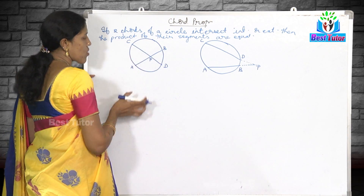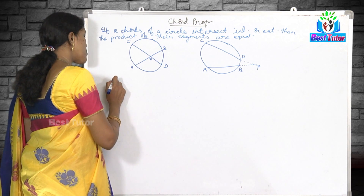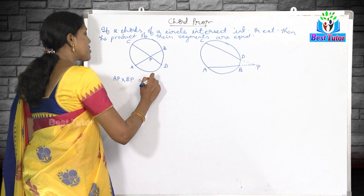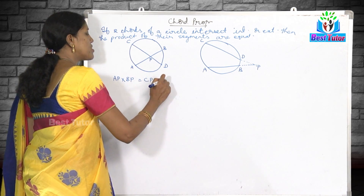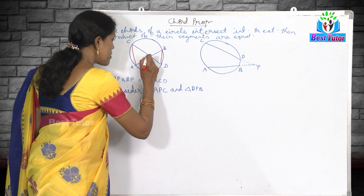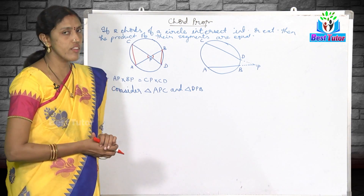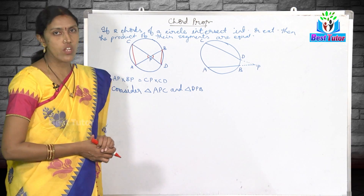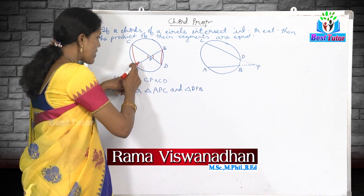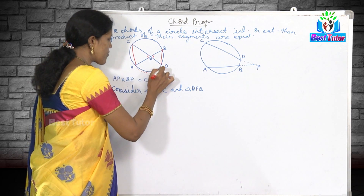AB is a chord, CD is a chord, and they are intersecting at a point P. I need to prove that AP × BP = CP × DP. In these two triangles we observe that these two angles are equal — they are vertically opposite angles.